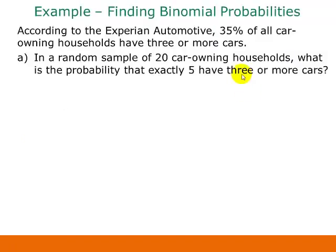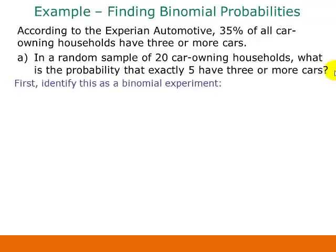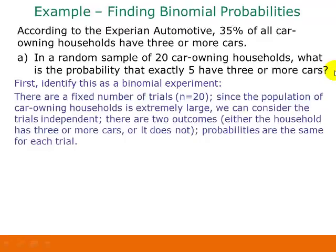Here's an example. According to Experian Automotive, 35% of all car-owning households have three or more cars. In a random sample of 20 car-owning households, what is the probability that exactly five have three or more cars? First, we check whether this is a binomial experiment. We have a fixed number of trials — a random sample of 20 households, so N = 20. Since the population is extremely large, we can assume the 20 trials are less than 5% of the population size.